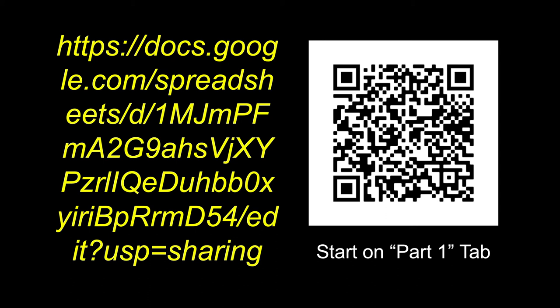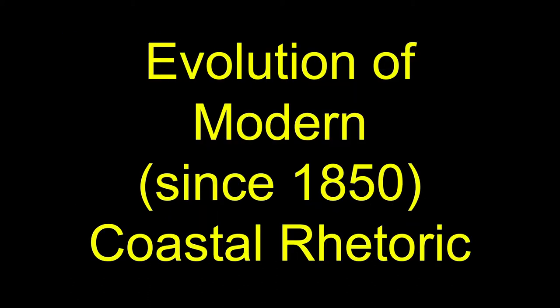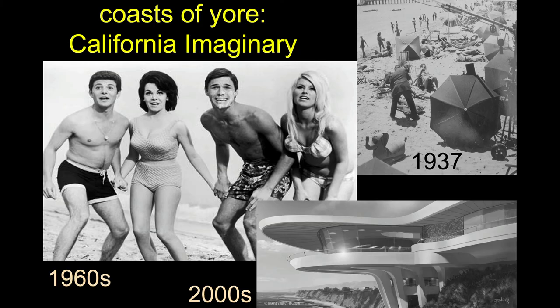We'll look at the types of things that come up when we use words like coast, sea, and tide. I'll conclude today by starting a discussion of some new thoughts I've had over the last couple of years teaching this class and working in the coastal zone — about how our changing rhetoric around the coast has progressed.